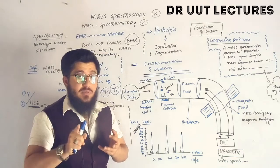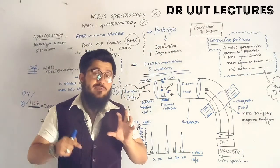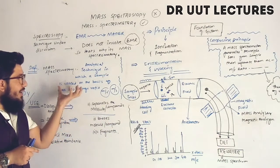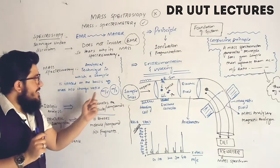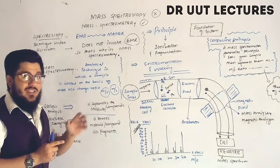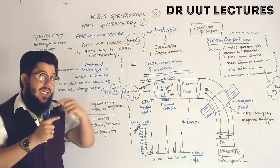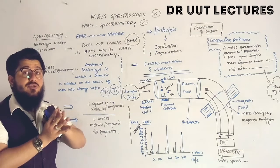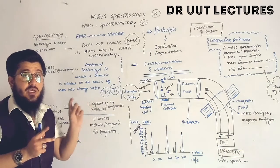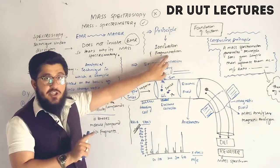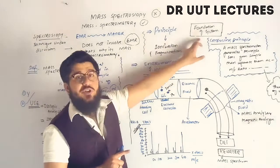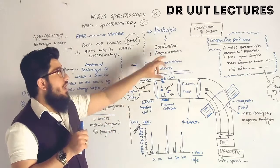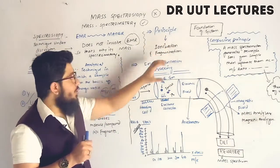When studying any spectroscopy or spectrometry technique, the principle focuses on what happens to the sample. In mass spectrometry, two things happen to the sample: first, ionization — the sample gets a charge; second, fragmentation — the sample is broken into fragments. So the principle of mass spectrometry is ionization and fragmentation, and this is the foundation of the entire system.